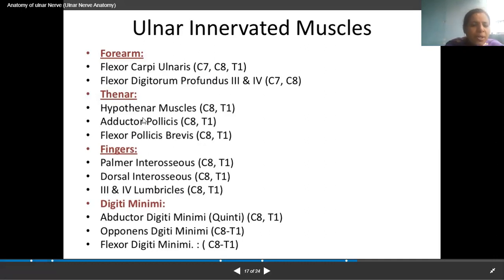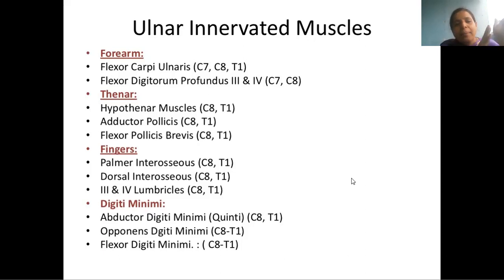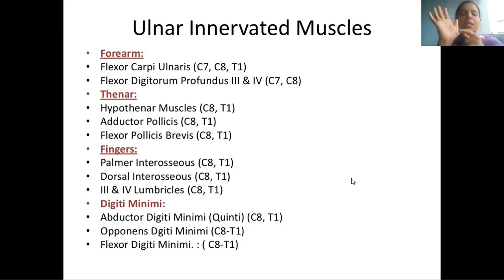The hypothenar group muscles are abductor digiti minimi, opponens digiti minimi, and flexor digiti minimi. These are the muscles of the palm supplied by the ulnar nerve. Because the ulnar nerve supplies all muscles of the palm except a few thenar muscles, this nerve is called the musician's nerve.